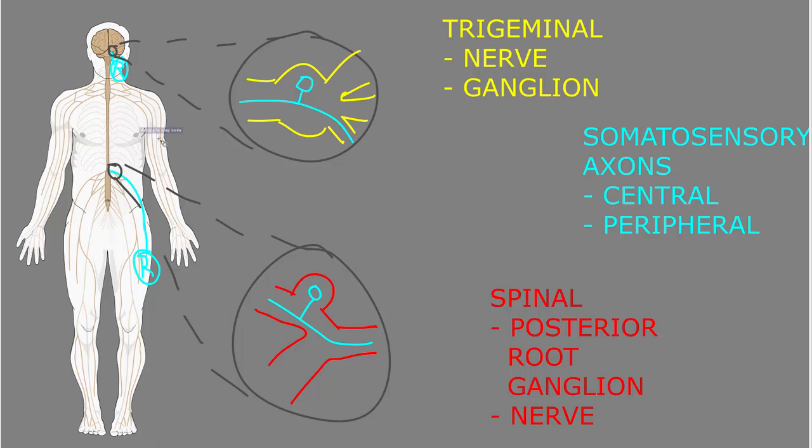For most of the body, the somas of these neurons are in the posterior spinal nerve root ganglia. So here, right next to the spinal cord, blown up a spinal nerve right here.